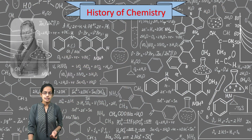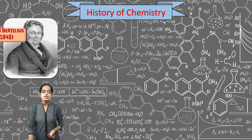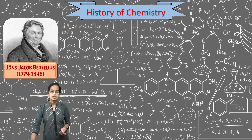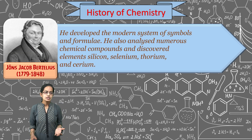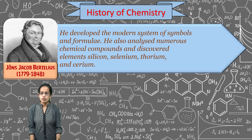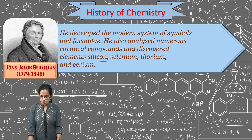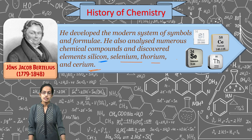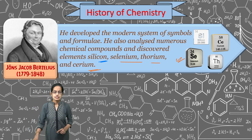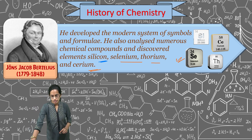The next important scientist is Berzelius. He talked about various chemical formulas and symbols. He discovered some major compounds and elements. Some of the important elements he discovered are silicon, selenium, thorium, and cerium. These four elements discovered and credited to Berzelius have been very important.